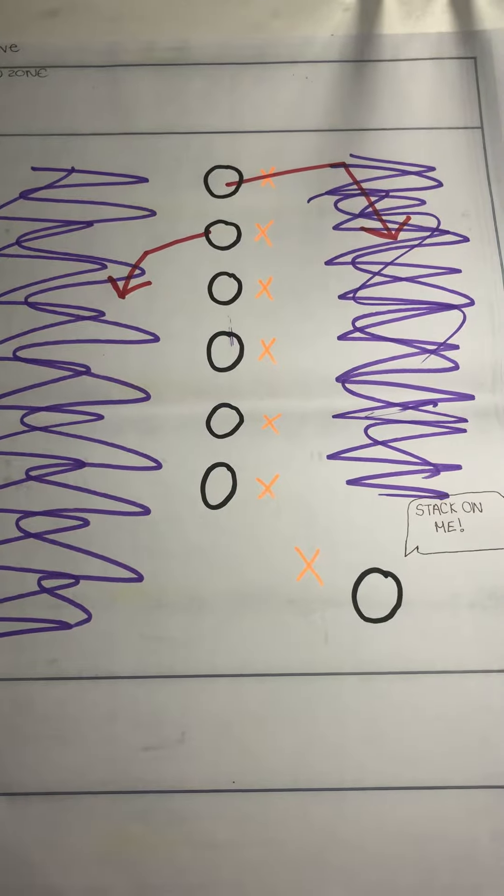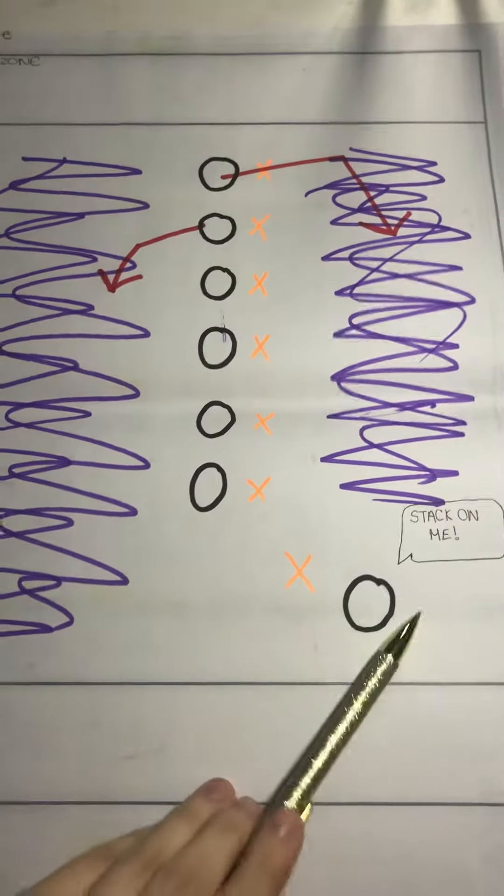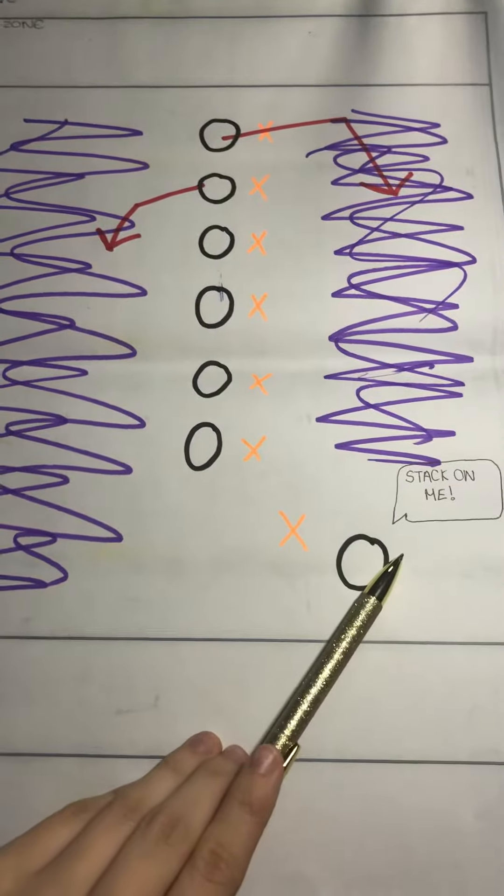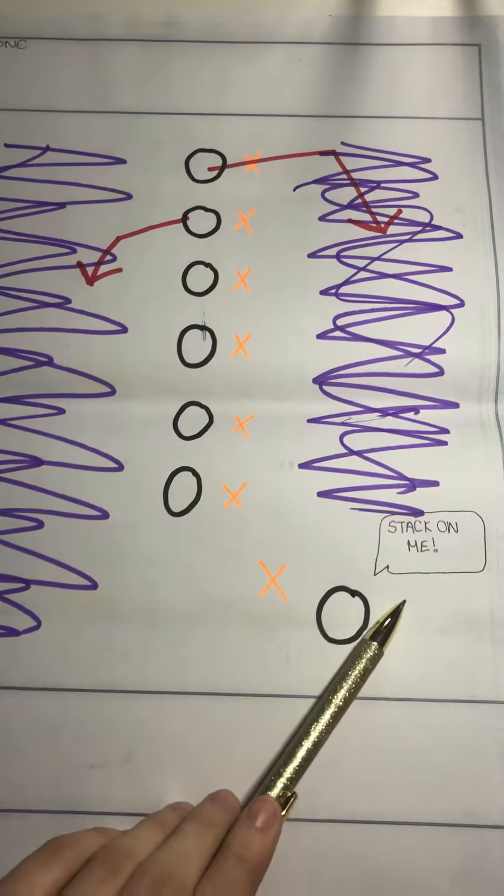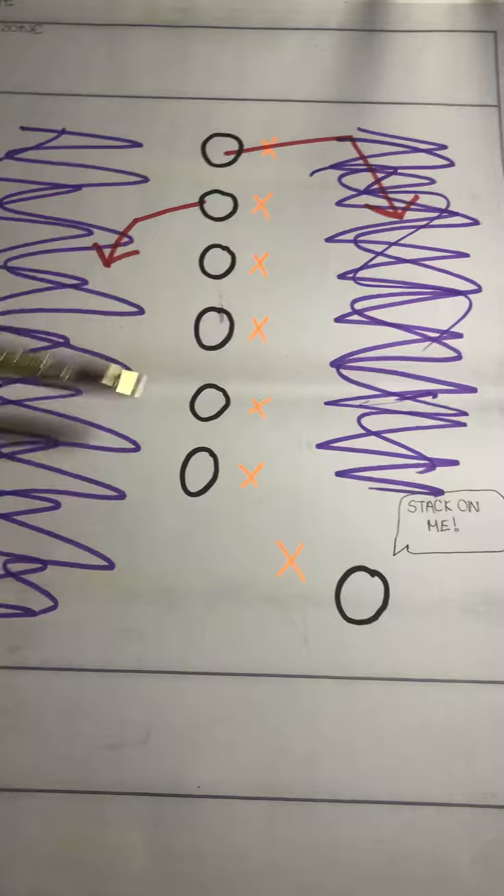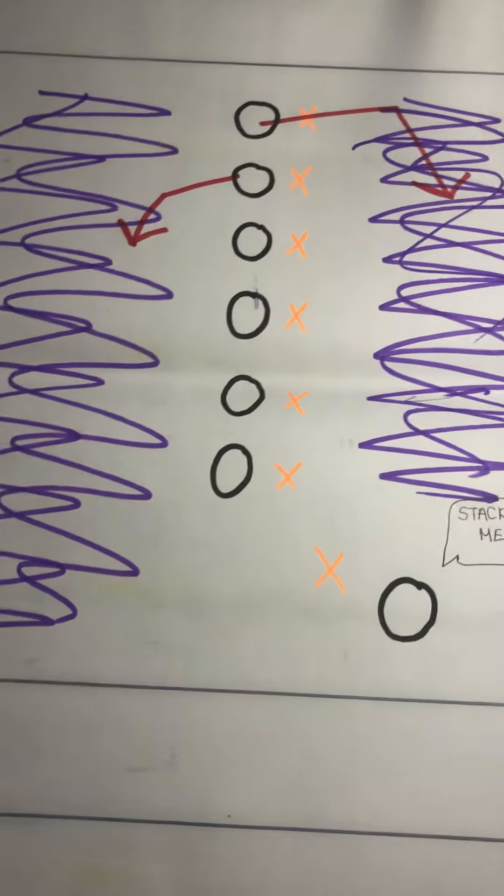This tactic is called stack offense and it begins by the handler, which is down here, shouting stack me. That basically means that they want the rest of their teammates to line up in a vertical line in order to perform this tactic.